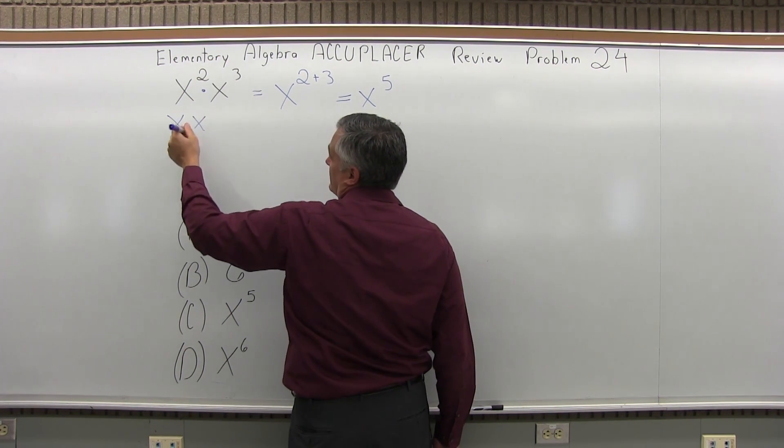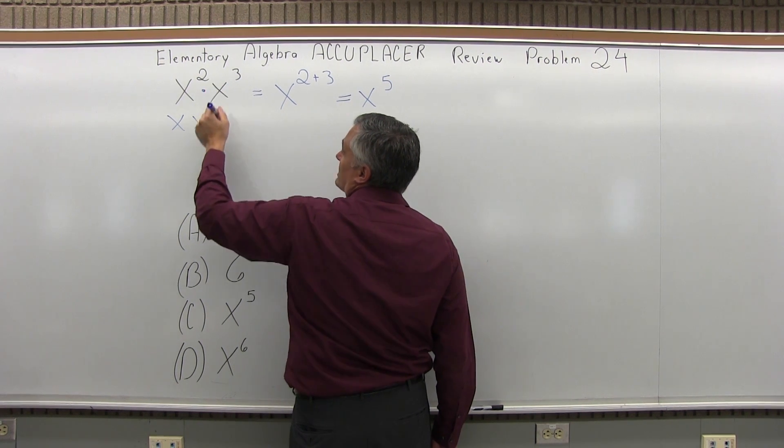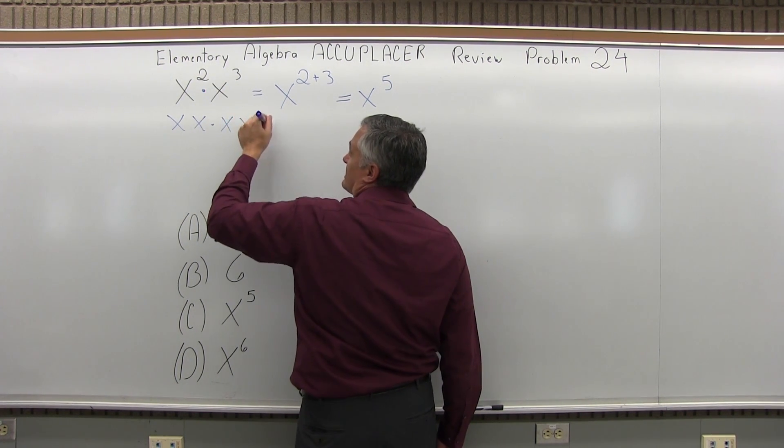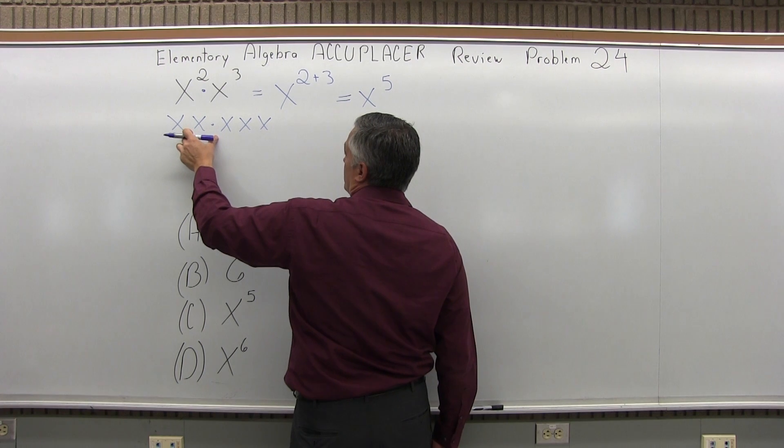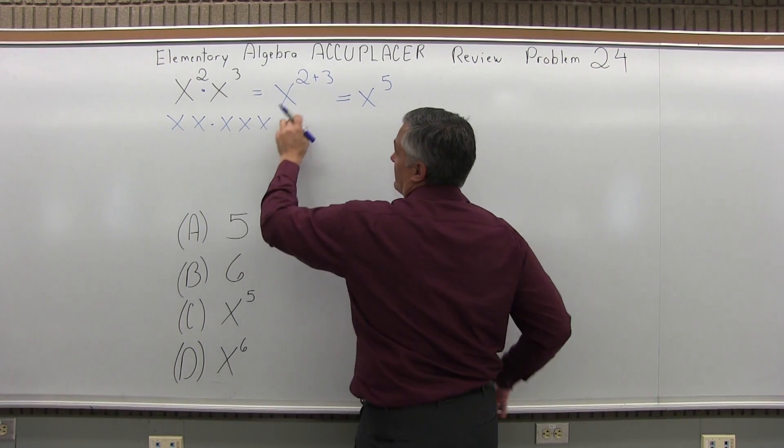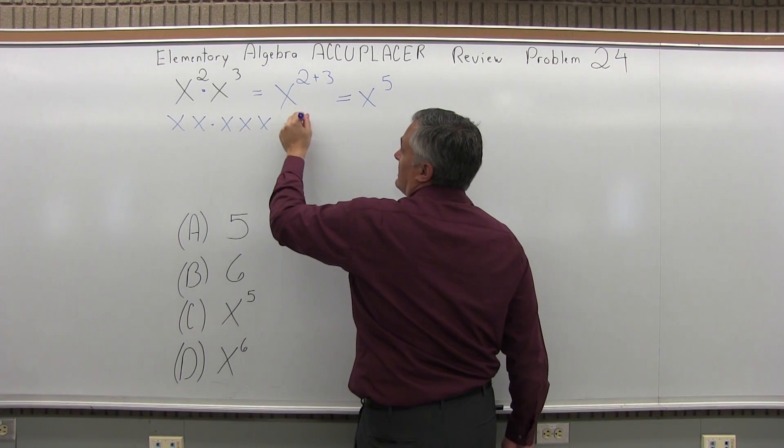So x squared is xx. Times x cubed is three x's, xxx. So now what's happening is you're multiplying five x's together. That's why you add the exponents.